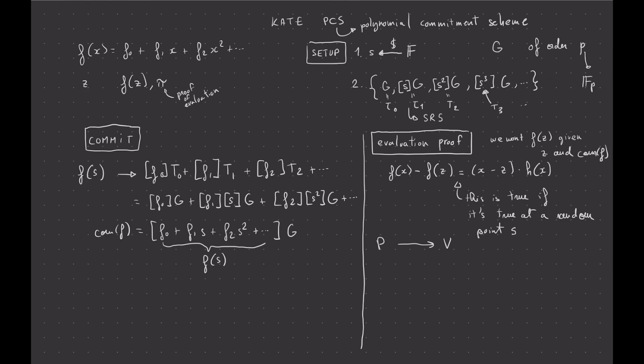But basically, the prover sends the verifier commitment to h(S), which they can create exactly in the same way that they created the one for f(S). So it'll be like h0 times t0 plus h1 times t1, et cetera. And then the verifier can do this. They can check if the commitment to f(S) minus the commitment to f(z), and the commitment to f(z) they can calculate themselves. The commitment of f(S) they already have, it's just a commitment of f, is equal to commitment of (x minus z), they can calculate themselves as well, times commitment of h(S), which was sent by the prover here.